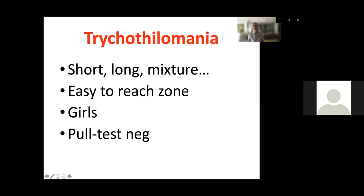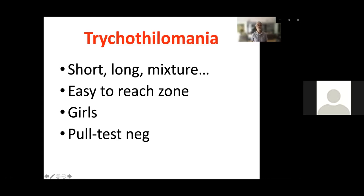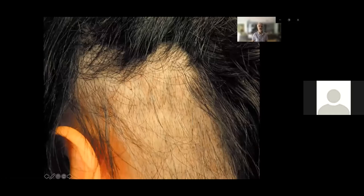You will find a mixture of hair lengths — we call it a dirty aspect of the scalp — with short, long, and mixed hairs. Usually patients choose an easy-to-reach zone; most people pull from the back of the scalp because it's more comfortable while at school or watching TV. This is the classical presentation: a dirty plaque with a mixture of broken hair, and you might see some hemorrhages close to the scalp. It's less common in children but you may also find it in males.